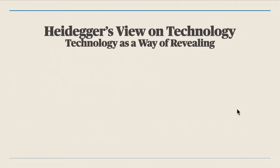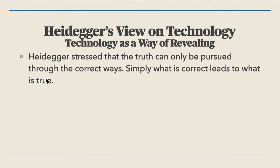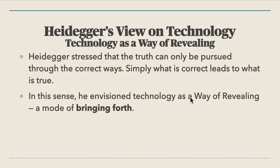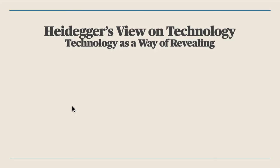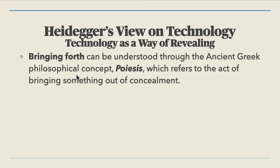Now we have Heidegger's view on technology — technology as a way of revealing. Martin Heidegger is a German philosopher, and one important part of his philosophy concerns technology. Heidegger stressed that truth can only be pursued through correct ways — what is correct leads to what is true. In this sense, he envisioned technology as a way of revealing, a mode of bringing forth.